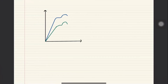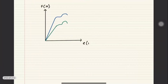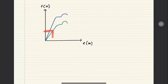Let me draw this properly. We have an F against E graph. The blue graph has a high gradient and the green graph has a lower gradient. If you apply force, the blue material has less elongation, while if you apply the same force to the green material, you have more elongation. So the blue material is stiffer — you need to apply a lot of force for only a little elongation, compared to the green material.